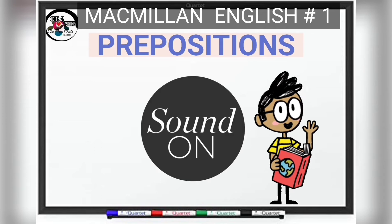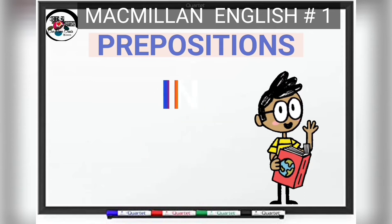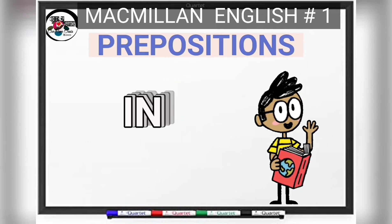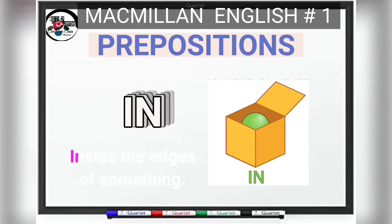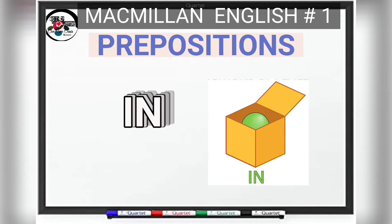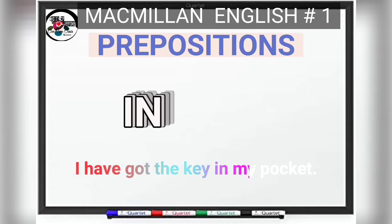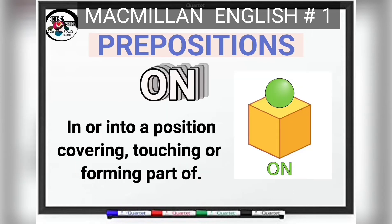Let's get started with IN. The best way to think about the preposition IN is being within something — inside the edges of something. Let's start simply with containers or spaces that are enclosed. For example: I have got the key in my pocket.